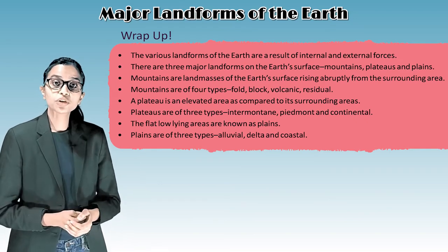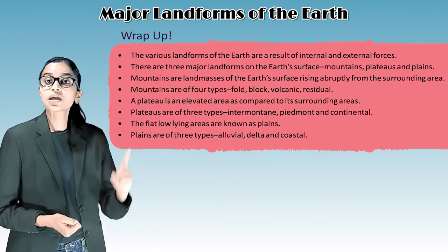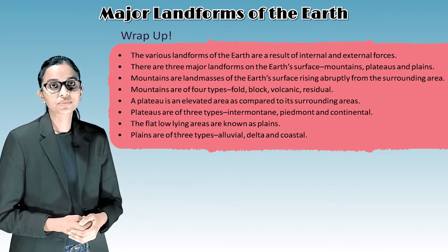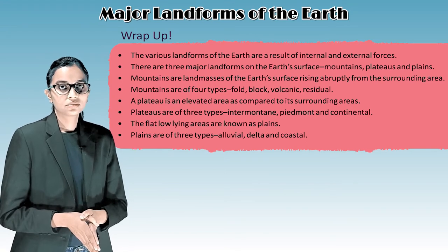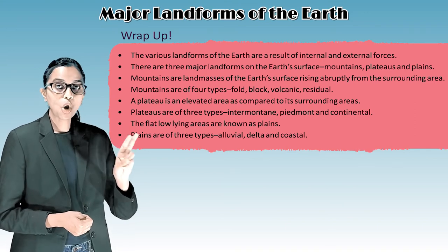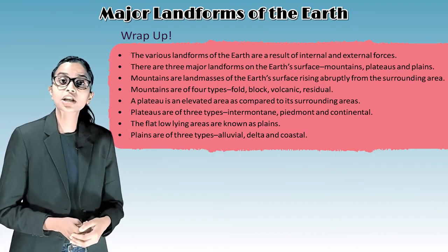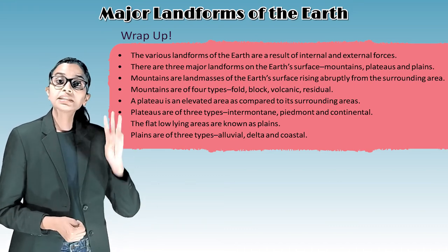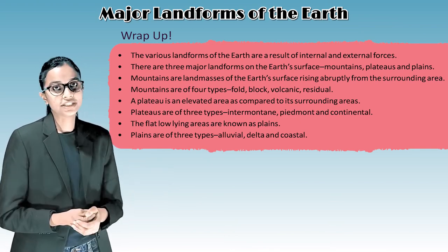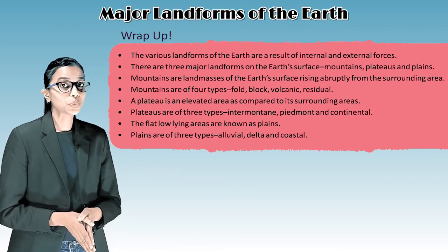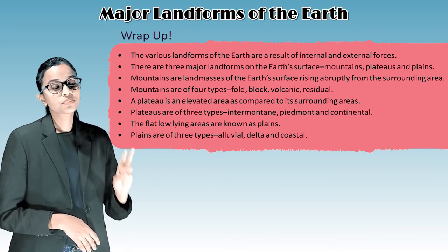To wrap up: the various landforms of the earth are a result of internal and external forces. There are three major landforms: mountains, plateaus, and plains. Mountains are landmasses rising abruptly from the surrounding areas and are of four types: fold, block, volcanic, and residual. A plateau is an elevated area compared to its surroundings and is of three types: intermountain, piedmont, and continental. The flat low-lying areas are known as plains, which are of three types: alluvial, delta, and coastal.